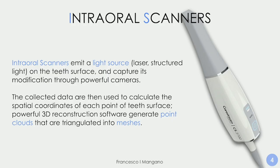We need to go back to basics. Intraoral scanners work by emitting a source of light — usually structured light, a grid or pattern, or laser. This grid or pattern of light undergoes deformation when it impacts on the scan bodies and the model. This deformation is captured by the cameras of the intraoral scanner, and the software creates point clouds. These point clouds are then triangulated into meshes.